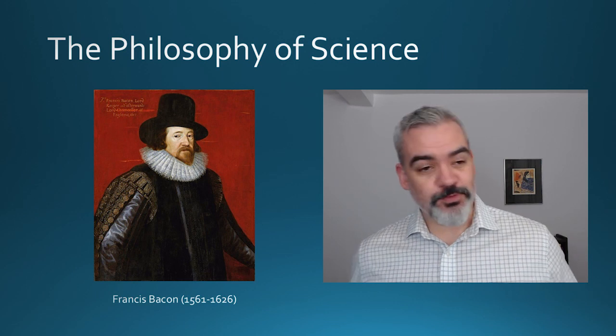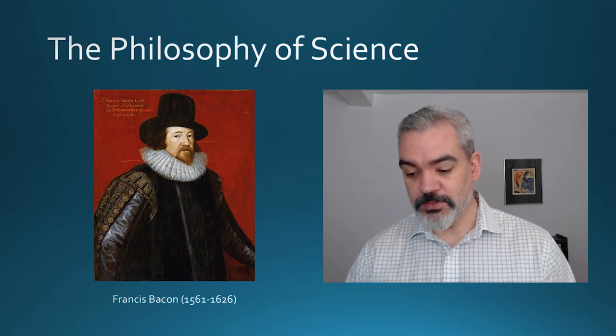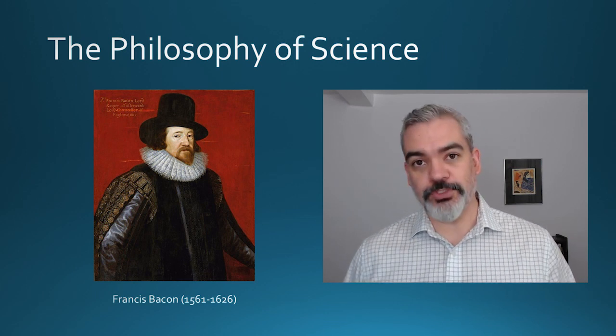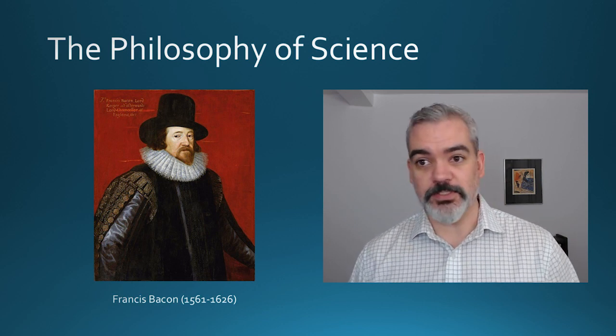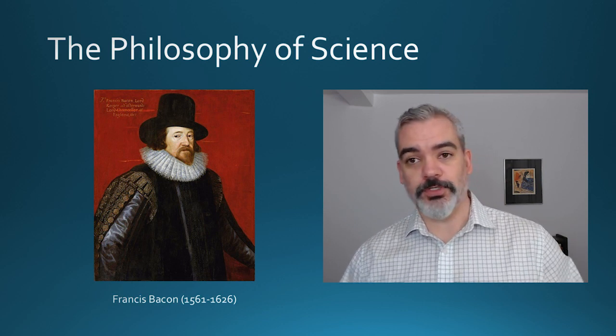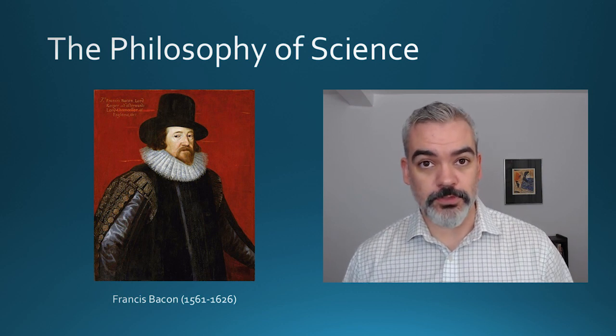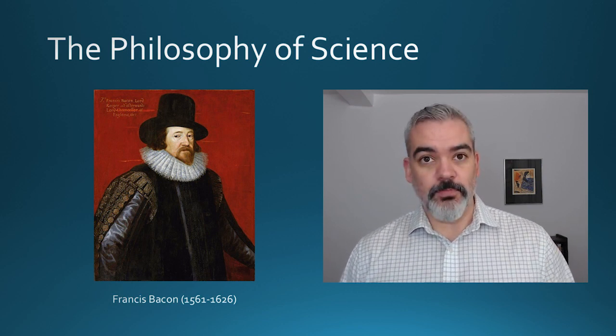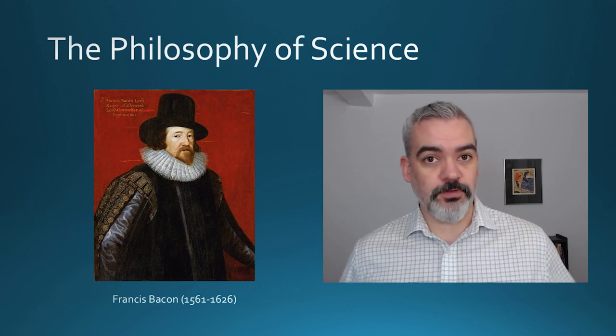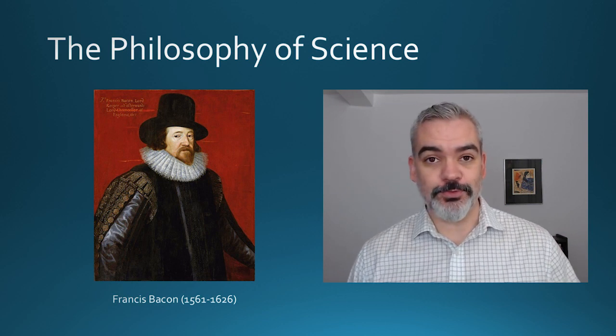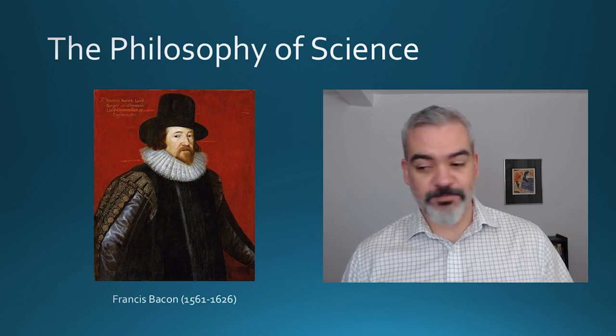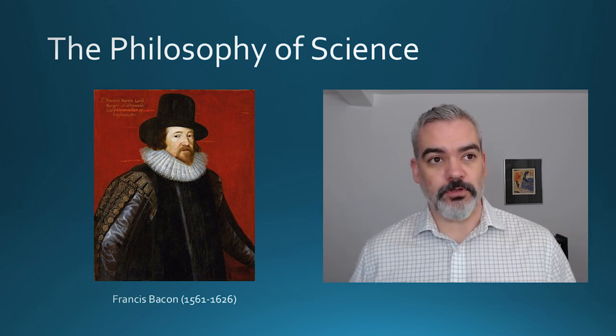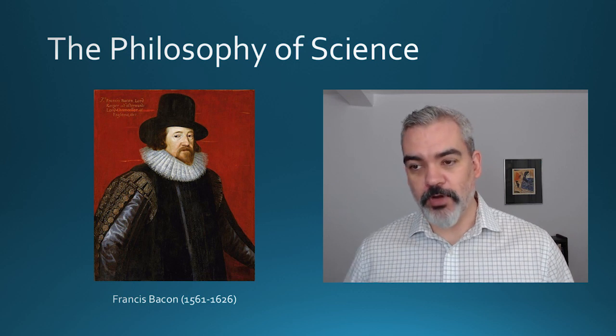In the Scientific Revolution, around the 1600s, there were quite a few shifts. One of the most important shifts was in the philosophy of science—that is, how people thought it was appropriate and helpful to try to gain knowledge about the world. One of the people most often associated with the shift in thinking that takes place during the Scientific Revolution is Francis Bacon. Francis Bacon was an advocate for a certain approach to knowledge, which is practical and empirical.